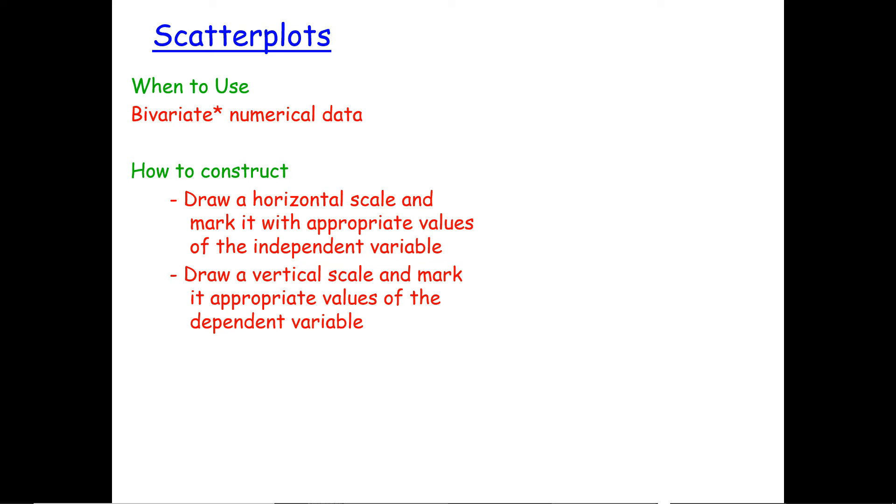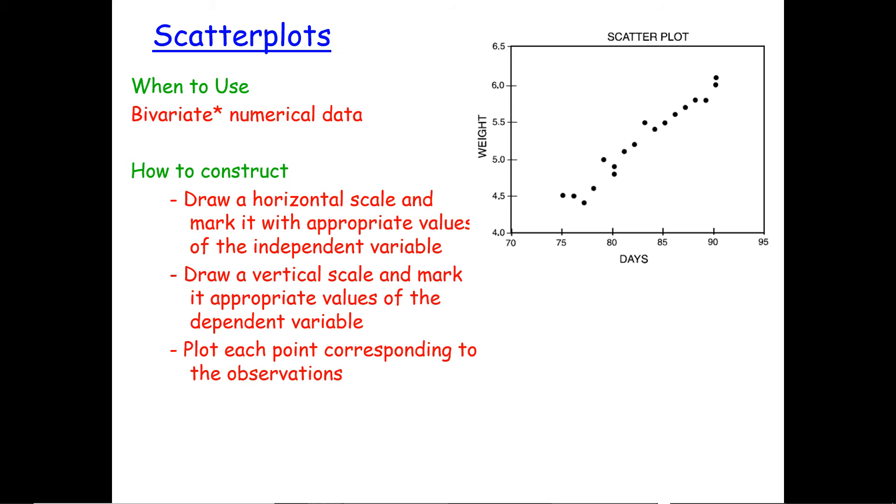Then we draw a vertical scale and mark it with appropriate values of the dependent variable. Then we're going to plot each point corresponding to the observations. So it might look something like this. To describe it, you need to comment on the relationship between the variables.